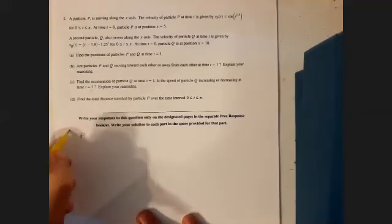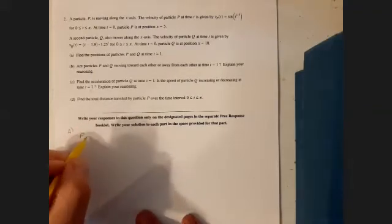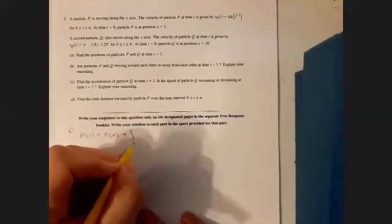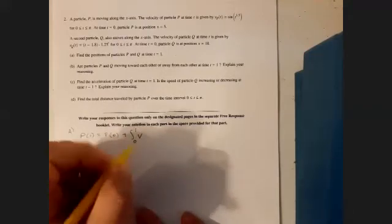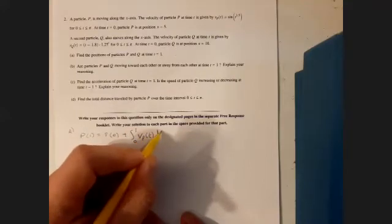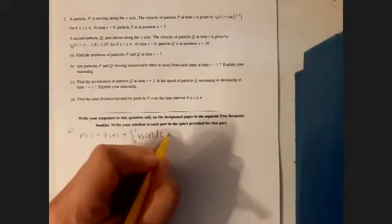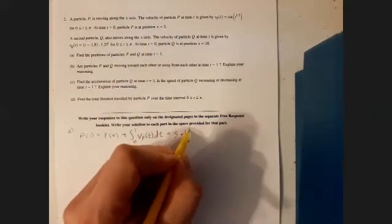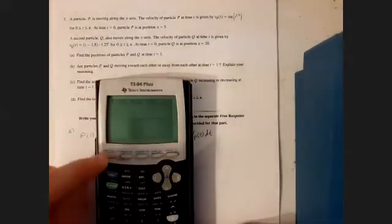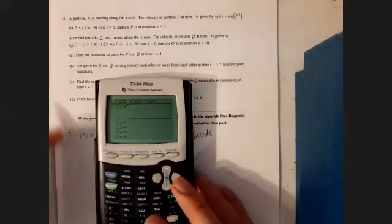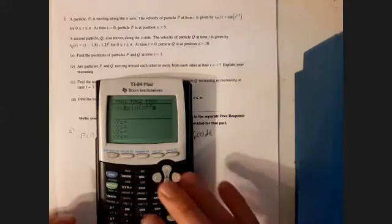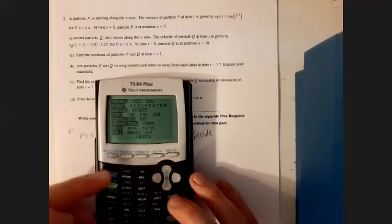So we want to find the position of particle P and Q. So P's position at 1 is going to be equal to the initial position, p sub 0, plus the net change in position from 0 to 1, which is given by the definite integral of v sub p of t from 0 to 1. P sub 0 was the initial position at x equals 5, so that'd be 5 plus the definite integral from 0 to 1 of v sub p of t dt. Now, this is where the calculator is going to be helpful. I'm going to go in the y equals menu and put the first velocity function in, so sine of t to the 1.5. And as a side note, you want to make sure your mode is in radian mode, which we already are.